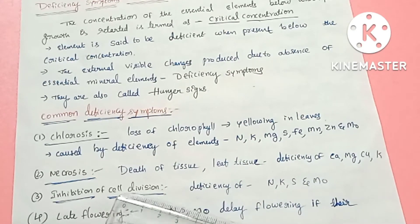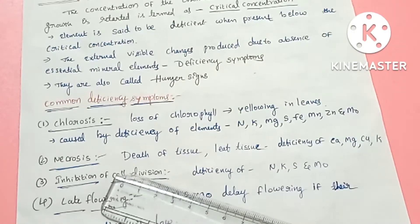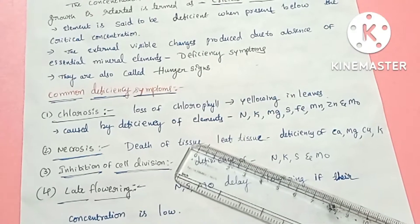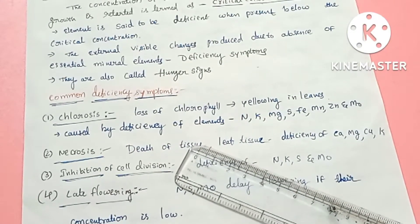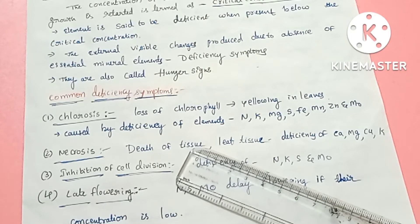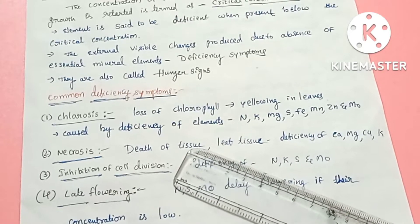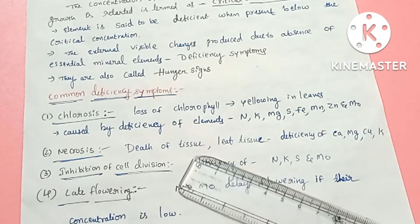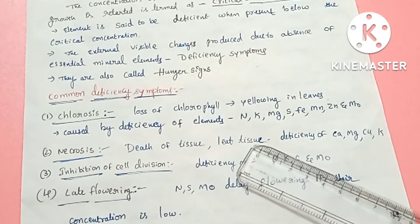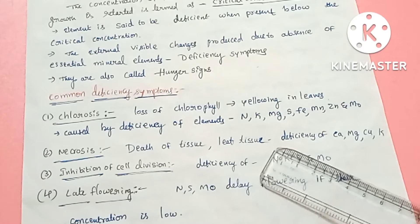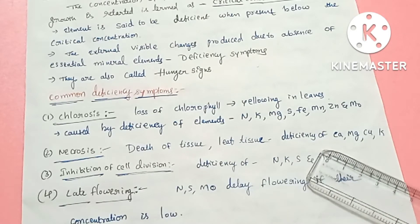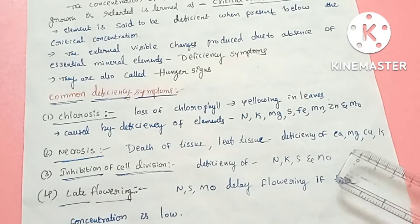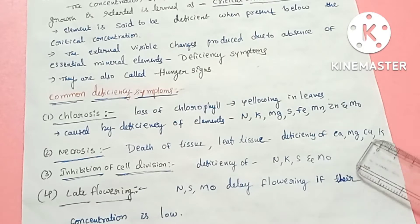The next symptom is necrosis. Necrosis means death of the tissue — plant tissue is damaged and dies. Most commonly, leaf tissue is affected. The elements whose deficiency causes necrosis are calcium, magnesium, copper, and potassium.